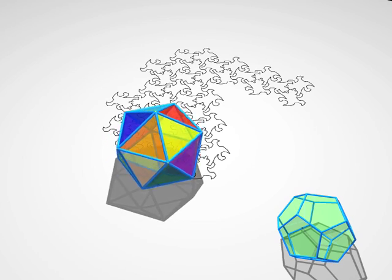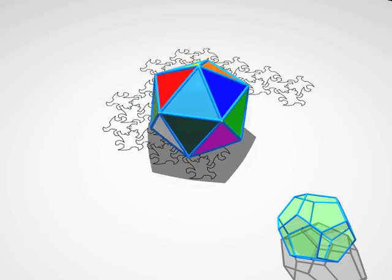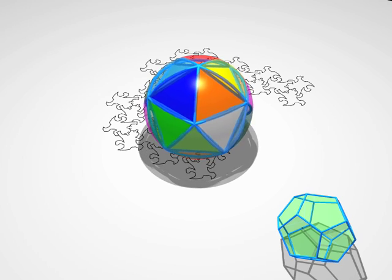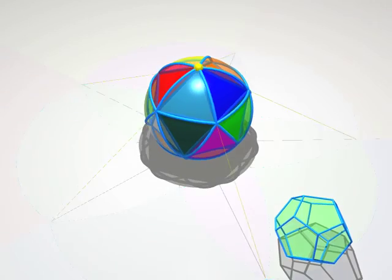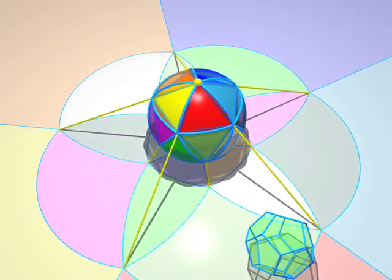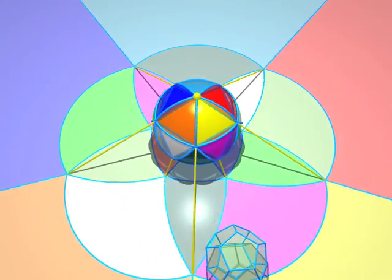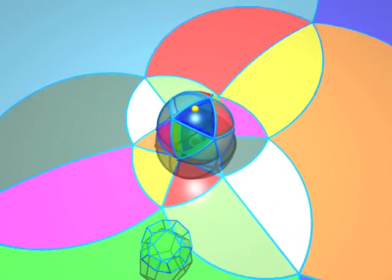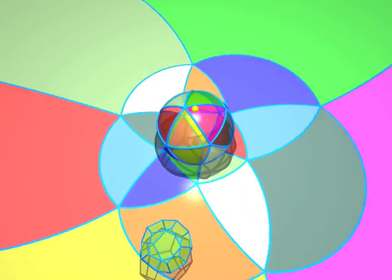Now, here comes an icosahedron. Its structure is more complicated, but it's not hard to understand even for the lizards. We can see 20 faces, 12 vertices and 30 edges. Can you count them all?